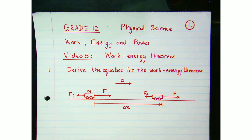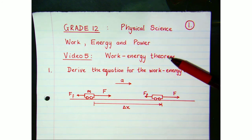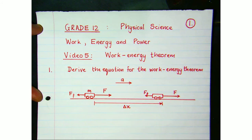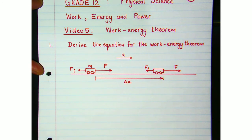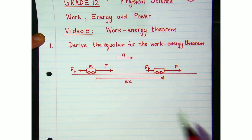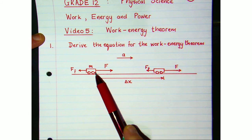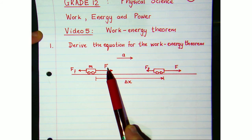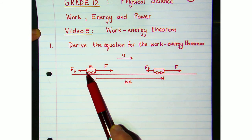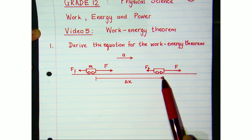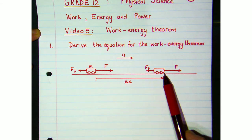This is video 5 of the grade 12 chapter on Work, Energy and Power, and today we're talking about the work-energy theorem. To understand it, we need to derive it. Let's consider a scenario: a car with two horizontal forces acting on it — the applied force of the engine and friction opposing its motion — both acting along the displacement delta x.